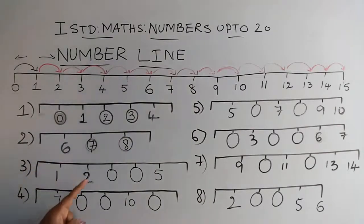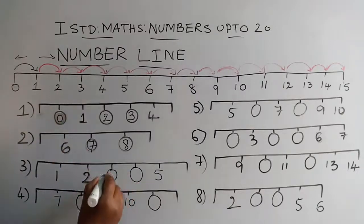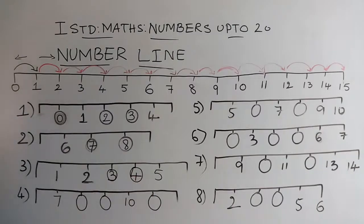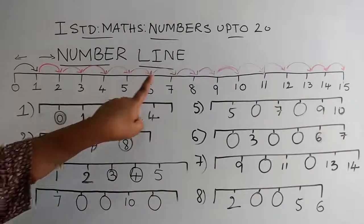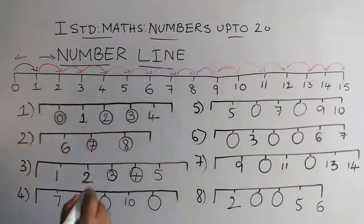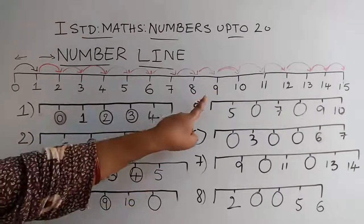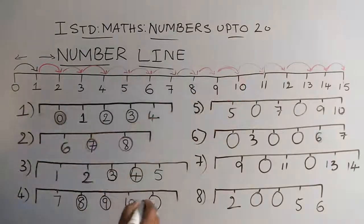Now, the third one. I have 1 and 2, 1 and 2, 3 and 4. Let me fill, 3 and 4. Next one, 7, 8, 9. I have 9, I have 10. And after 10, I have one more blank here. That is 11.